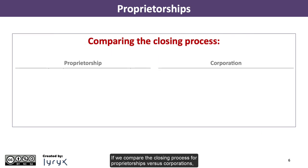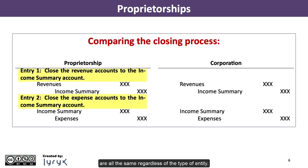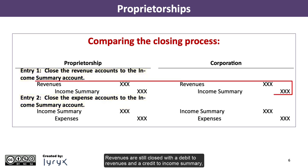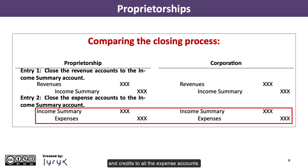If we compare the closing process for proprietorships versus corporations, we find that the first two entries to close revenues and expenses are the same regardless of the type of entity. Revenues are still closed with a debit to revenues and a credit to income summary, and expenses are still closed with a debit to income summary and credits to all the expense accounts.